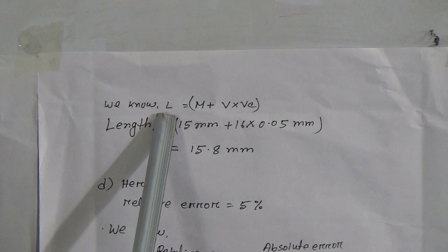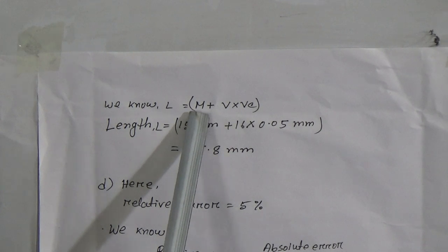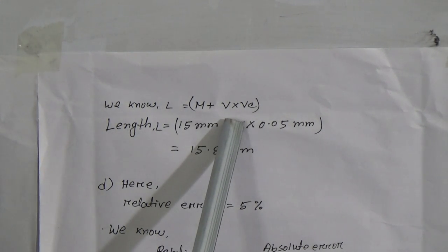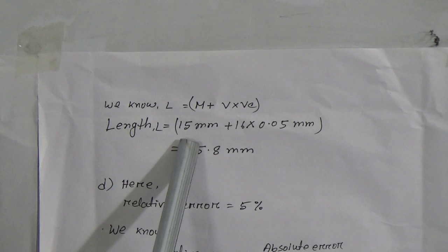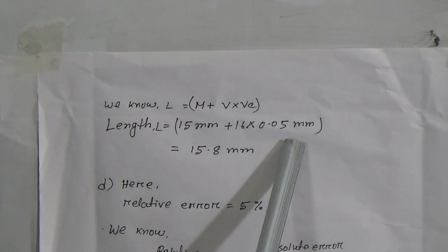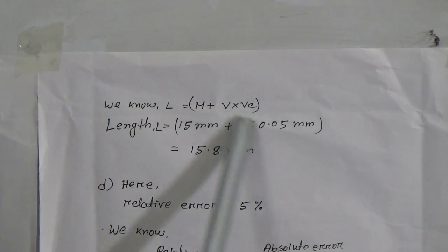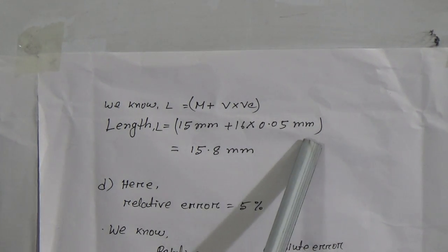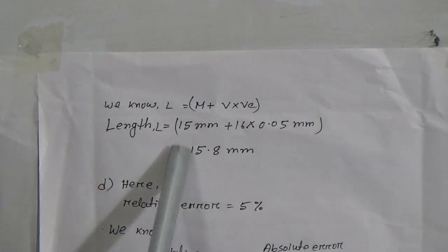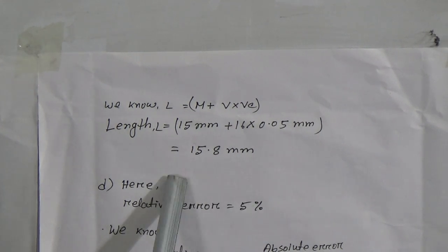Now we know the formula for length: L equals M plus V into VC, where M is the main scale reading, V is the Vernier coincidence, and VC is the Vernier constant. Putting M equal to 15 millimeter, V equal to 16, and VC equal to 0.05 millimeter, after calculating we get the length L equal to 15.8 millimeter.